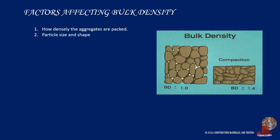For a given specific gravity, the angular aggregates show a lower bulk density. If the addition of smaller particles is possible within the voids of larger particles, then these smaller particles enhance the bulk density of the packed material.